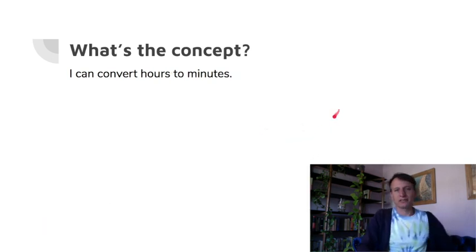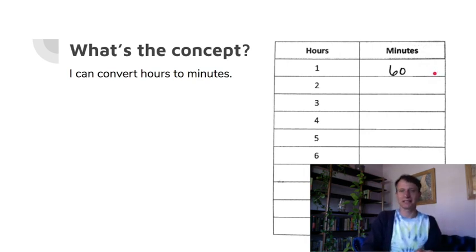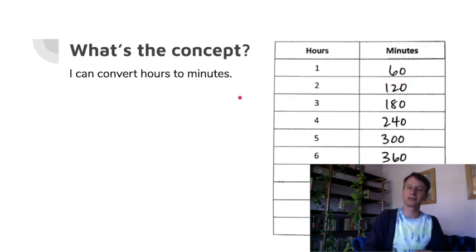All right, hours to minutes. Well, this is an interesting one because how many minutes are in an hour? It's again 60. So guess what? This table is going to look identical to the last one with seconds in a minute because it's skip counting by 60 all the way down.